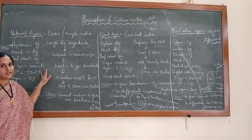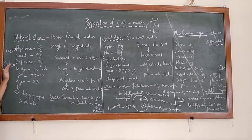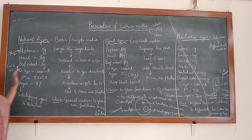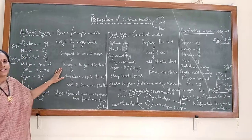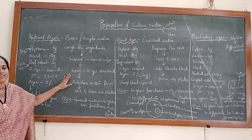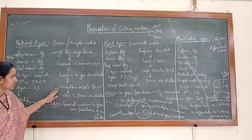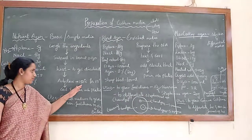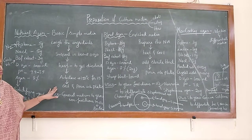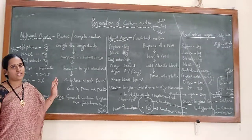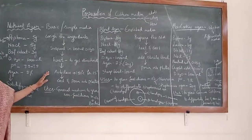To prepare nutrient agar: weigh individual ingredients separately and suspend them in 1000 ml of distilled water. Gently heat the components so that each nutrient dissolves in the distilled water. After that, give for autoclave at 121°C for 15 minutes. After cooling, pour the media into sterile petri plates.